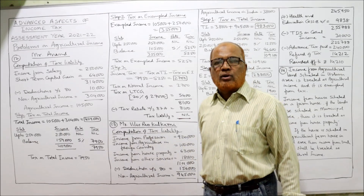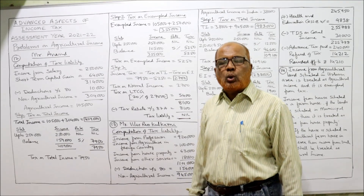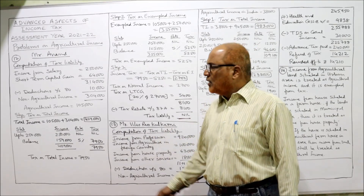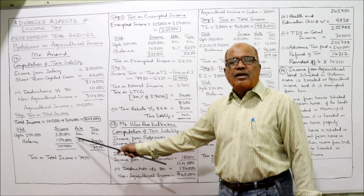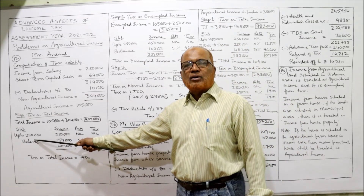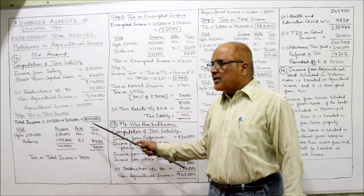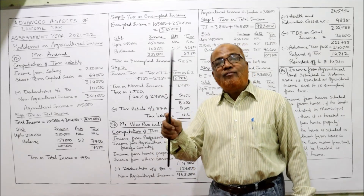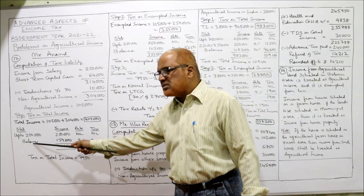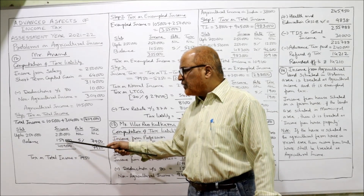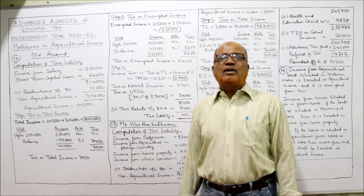Mr. Anand has agricultural income of 1,05,000 and non-agricultural income of 3,04,000, so the clubbing provision will apply. Step 1: Calculate tax on total income. Total income equals agri plus non-agri: 1,05,000 plus 3,04,000 equals 4,09,000. Tax on total income using slabs — first slab up to 2,50,000: nil. Second slab from 2,50,001 to 5,00,000, but our income is only 4,09,000, so the balance is 4,09,000 minus 2,50,000 equals 1,59,000. At 5%, tax is 7,950.